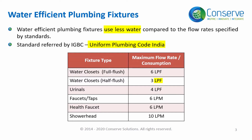LPF refers to liters per flush and LPM refers to liters per minute. LPF is used for water closets and urinals, and LPM is used for wash basins and showers. Water efficient plumbing fixtures should consume less water compared to the values specified in this table.